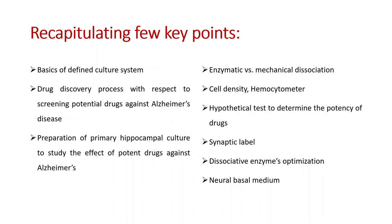We have discussed about a hypothetical test to determine the potency of drugs, studying the importance of synaptic labeling, and dissociative enzyme optimization. We have learnt about several enzymes important for primary hippocampal culture, including papain, which is an enzyme derived from papaya. We have also studied about the importance of neurobasal medium and why it is required.